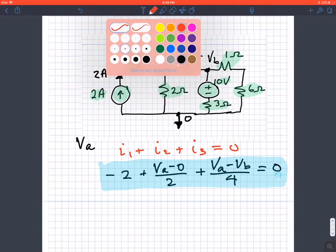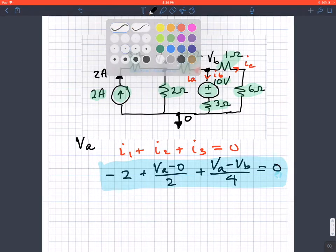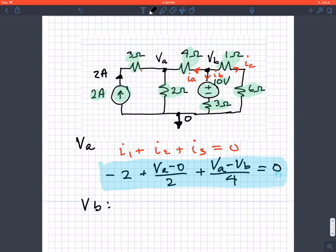From here, I'm going to have three currents coming out of node VB: IA, IB, and IC. What we know for node VB is that IA plus IB plus IC equals zero.